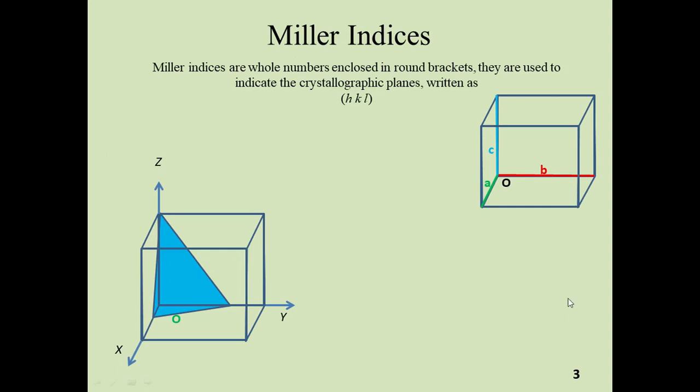Before going to the crystal planes, we will first recall the main idea of Miller indices. Miller indices are whole numbers enclosed in round brackets; they are used to indicate the crystallographic planes, written as (hkl) enclosed in round brackets.